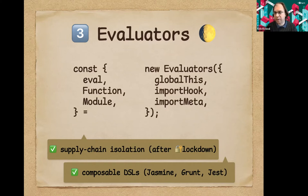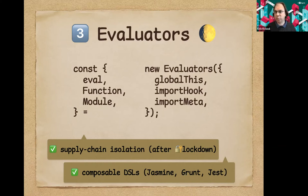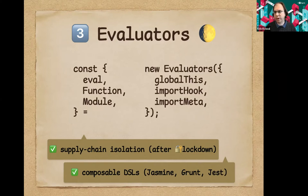This gives us the ability to fully isolate code so that it only sees the global object provided. At Agoric we're motivated by this because we want to secure our supply chain and create environments where mutually suspicious programs can exist in the same memory. It also happens to be useful for creating composable DSLs — currently DSLs like Jasmine or Jest have to punch the shared global object with functions like describe, before, or after. To make these work, they either use separate realms — which creates identity discontinuities — or a lightweight solution allowing only one DSL evaluation concurrently.